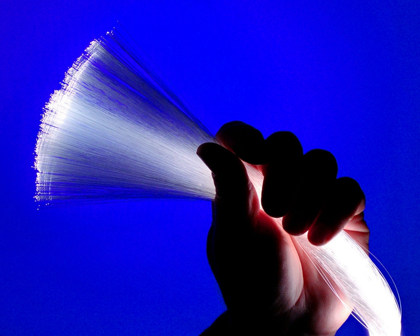Packets consist of two kinds of data: control information and user data. The control information provides data the network needs to deliver the user data, for example, source and destination network addresses, error detection codes, and sequencing information.